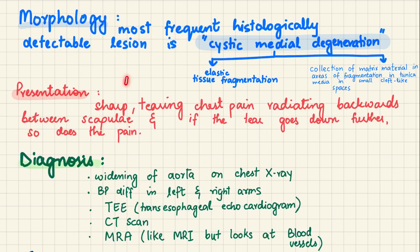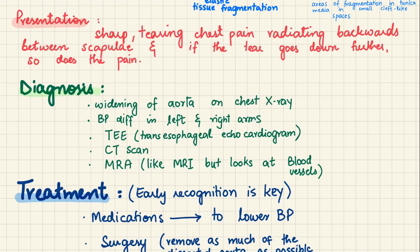Aortic dissection presents as a sharp, tearing chest pain radiating backward between the scapulae. If the tear progresses downward, so does the pain.